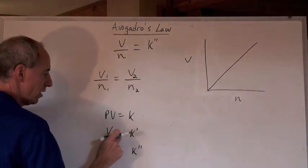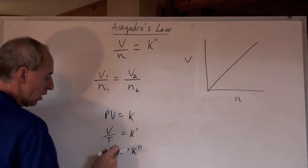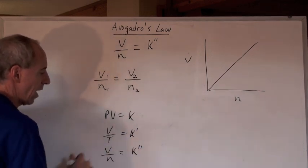PV equals K, Boyle's law. V over T equals K prime, that would be Charles' law. V over n equals K double prime, that's Avogadro's law.